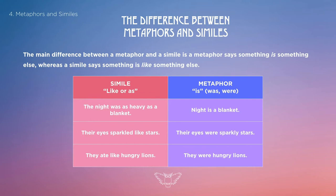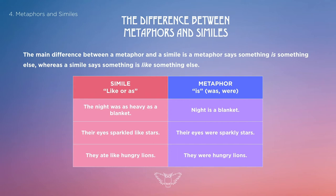Here's a chart using pretty much the same sentence, tweaked slightly, so you can hear it as a metaphor and as a simile. The simile would be: 'the night was as heavy as a blanket,' whereas the metaphor would be: 'night is a blanket.' Second example — simile: 'their eyes sparkle like stars,' metaphor: 'their eyes were sparkly stars.' Third — simile: 'they ate like hungry lions,' metaphor: 'they were hungry lions.'